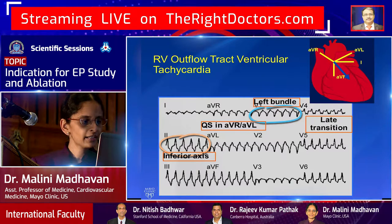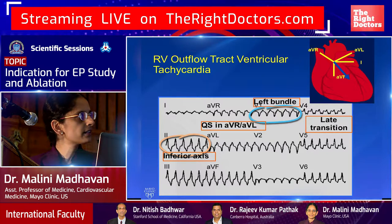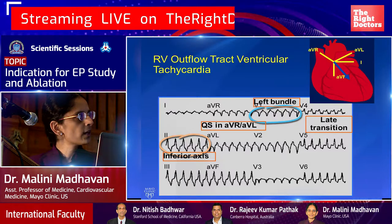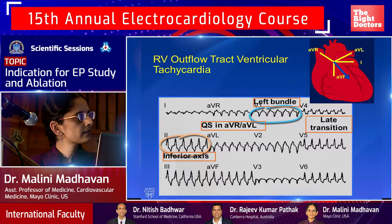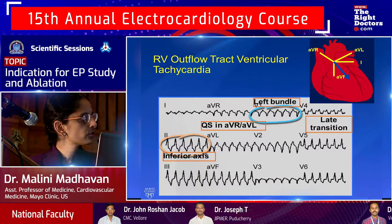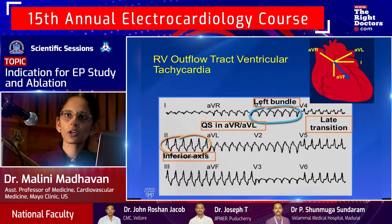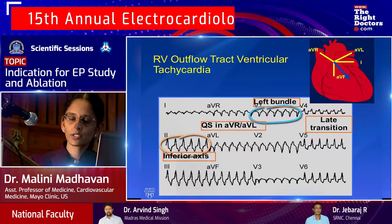Another example of outflow tract VT at a slower rate: V1 shows left bundle branch type morphology, leads 2, 3, AVF show tall positive R-waves, and AVR and AVL are negative. Think outflow tract VT in a structurally normal heart. Ablation works well for this condition, with approximately 80% cure rate.